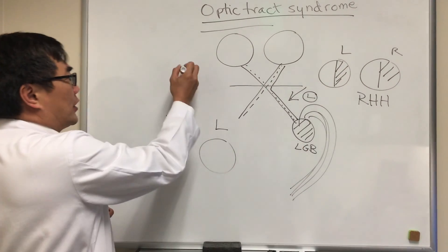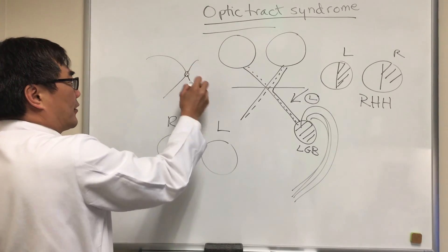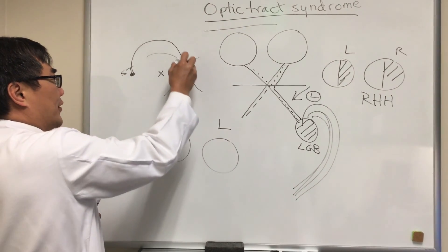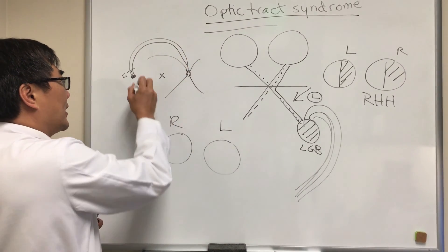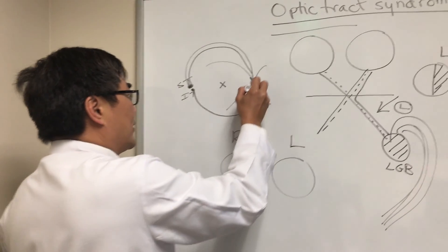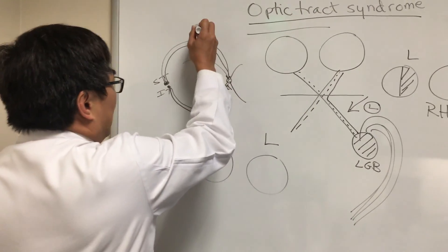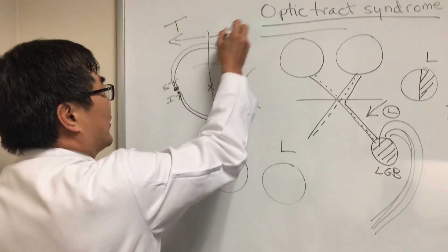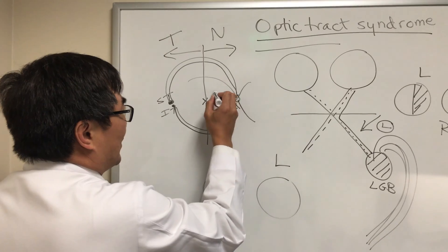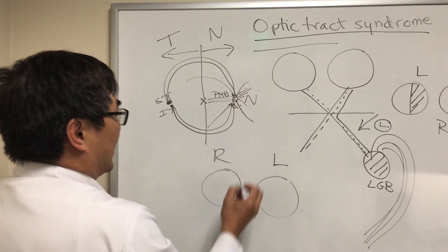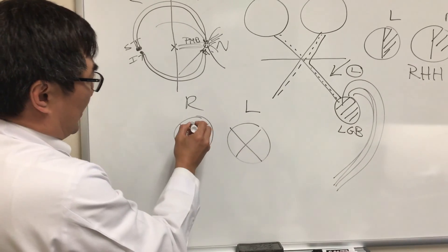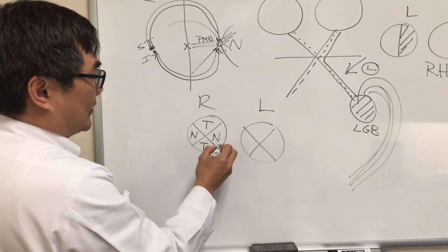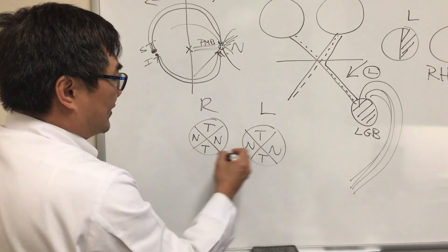In the retina, a superior temporal fiber doesn't go straight into the optic nerve — it goes all the way around the fovea and inserts into the top of the disc. Inferior temporal fibers likewise go all the way around the fovea and insert into the bottom of the disc. Because the fovea is the center of the eye, anything on one side of the fovea is temporal and everything on the other side is nasal. Practically, the papillomacular bundle and the nasal fibers are both nasal. So in the optic nerve: the top is temporal fiber, the bottom is temporal fiber, the papillomacular bundle is nasal, and the remaining portion is also nasal — giving us a TT and NN fiber distribution.